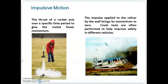When a force acts on a particle during a very short time interval and is large enough to produce a definite change in momentum, the resulting motion is called impulsive motion. Examples include the thrust of a rocket acting over a specific period to give the rocket linear momentum, the impulse applied to a rail car by a wall bringing its momentum to zero, and crash tests performed to improve vehicle safety.